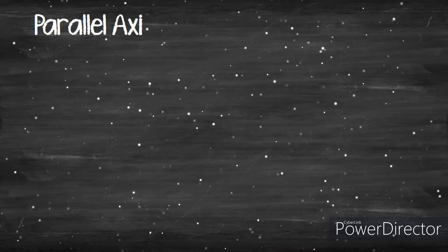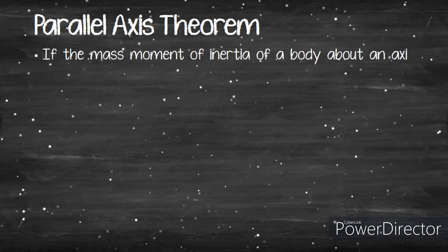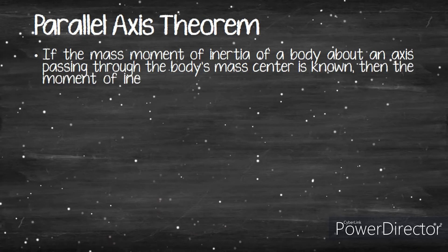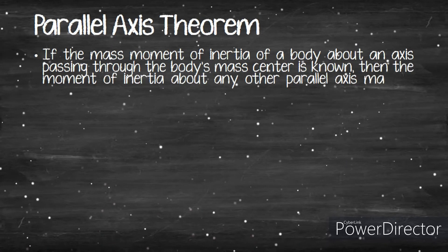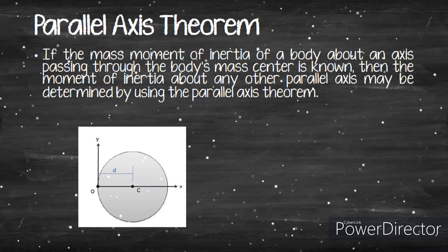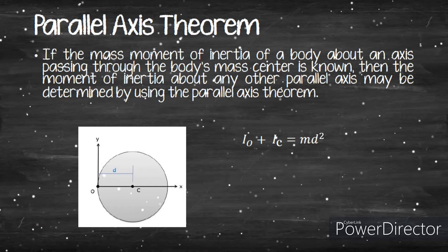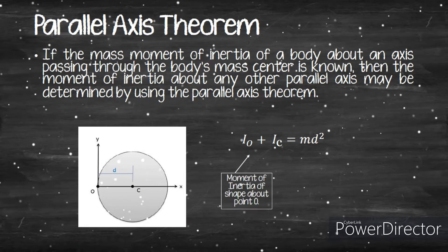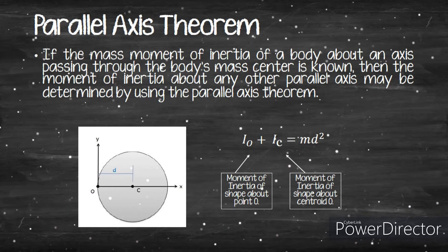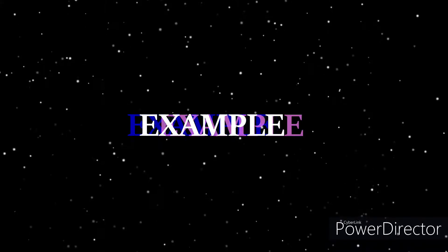For the parallel axis theorem, if the mass moment of inertia about any axis passing through the body's mass center is known, the moment of inertia about any other parallel axis can be determined. From the figure, Io = Ic + md², where Io is the moment of inertia about point O, Ic is the moment of inertia about the centroid, and md² accounts for the distance between O and C.